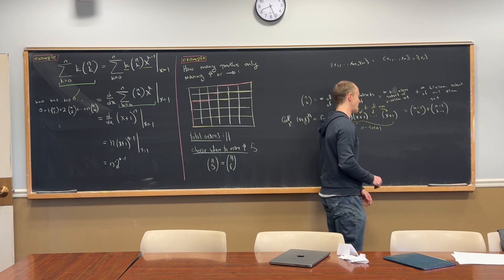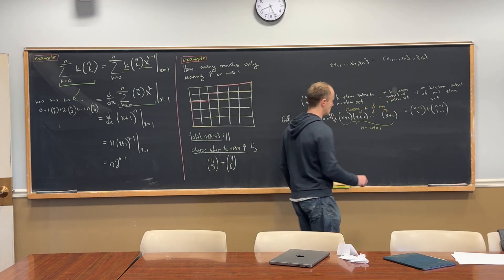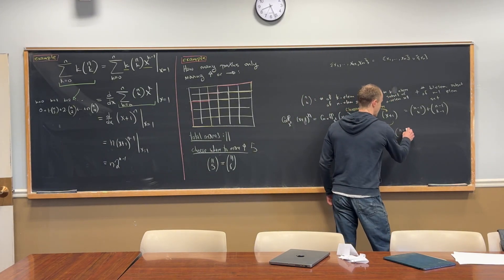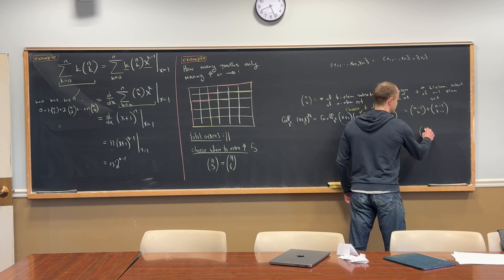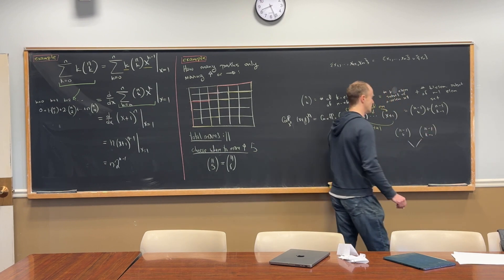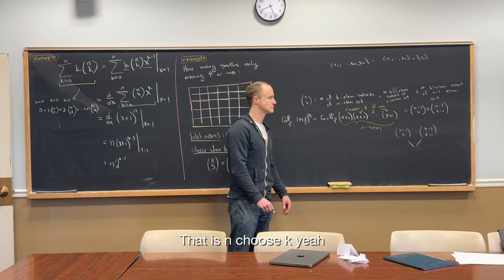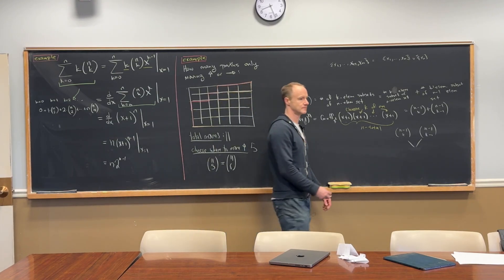So n choose k equals (n-1 choose k) plus (n-1 choose k-1). If you make Pascal's triangle, these two entries are right above, and who's right below them? That is n choose k. That's Pascal's triangle rule — it all follows just because of that counting argument.